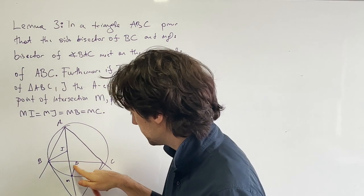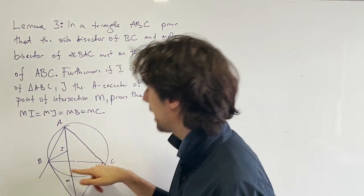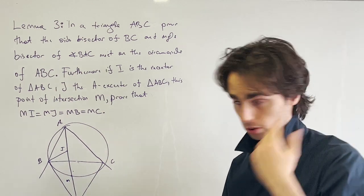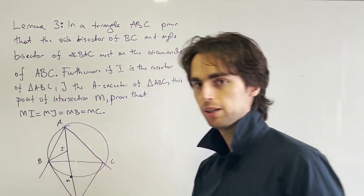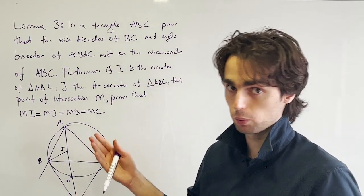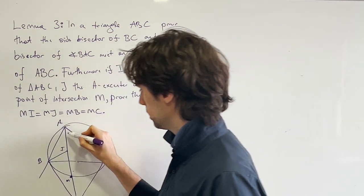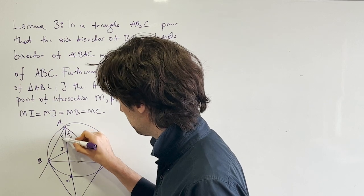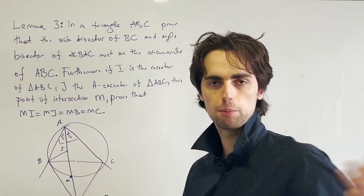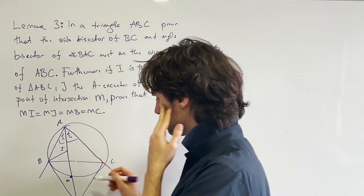However, if we take M to be the intersection of the angle bisector and the circumcircle, call this point M, we can call it whatever we want at this point. We're not dealing with the second part just yet. And now what do we have? Well, let's do the angles, alpha half, alpha half. We really don't care about I and J at this point.